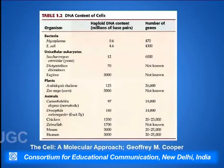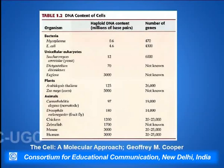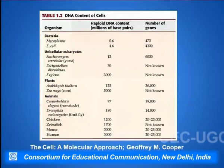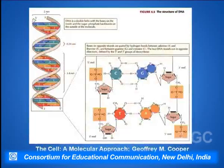In this tabular representation, I have shown the DNA contents of the cell within various organisms. We can see the DNA content present in the bacterial system, then in the plant system, and then in the animal systems. The haploid DNA content is shown and the number of genes present within these organisms is also shown.